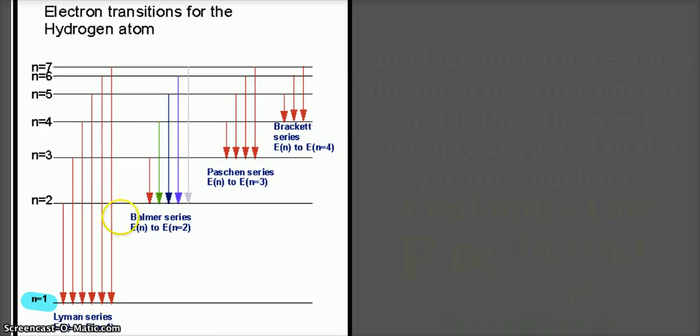If we look here, if the electron comes from a higher energy level and lands at energy level 2, this is the atomic emission spectrum that we see for hydrogen, the Balmer series. There's a very distinct red, green, blue, and purple line on the atomic emission spectrum for hydrogen.